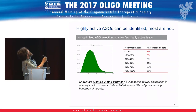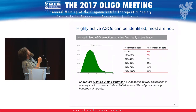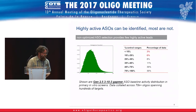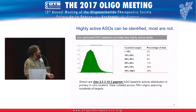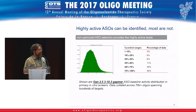This is a histogram of percent control — good oligos are on the left at zero percent control, while most ASOs are actually not that active. Our good compounds — and this is in vitro screening data using our Gen 2.5 cEt experience — are usually less than 15 percent control, and you can see they're challenging to find.